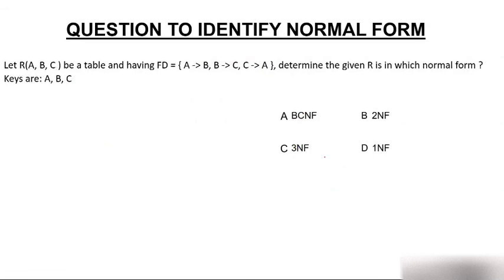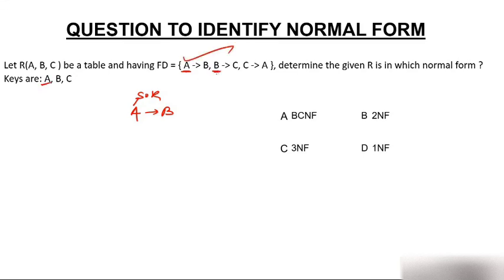For the last question, you have a table ABC with functional dependencies A to B, B to C, and C to A, and you have to determine which normal form it is in. Checking BCNF: is A a super key? Yes, A is a candidate key, so A to B is in BCNF. Is B a super key? Yes, so B to C is in BCNF. Is C a super key? Yes, so C to A is in BCNF. All functional dependencies are in BCNF, so the table is in BCNF. We have now solved questions covering tables in 1NF, 2NF, 3NF, and BCNF.